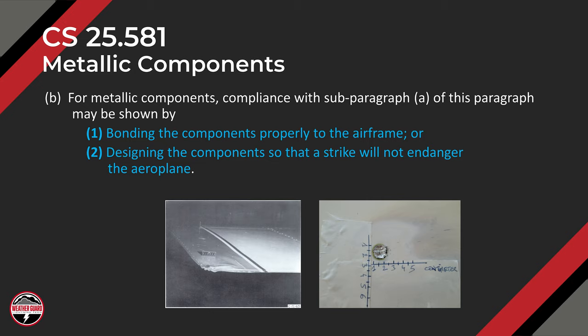For metallic components, compliance with subparagraph A may be shown by: 1, bonding the components properly to the airframe, or 2, designing the components so that a strike will not endanger the airplane. On the left is a King Air wingtip, which is a metallic wingtip where lightning has attached and physically warped and crushed part of the aircraft structure.